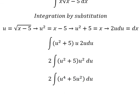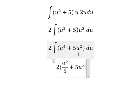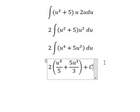And now we can get the final answer. The integration of u⁴, we have u⁵ over 5. The integration of u², we have u³ over 3. And we put the constant C.